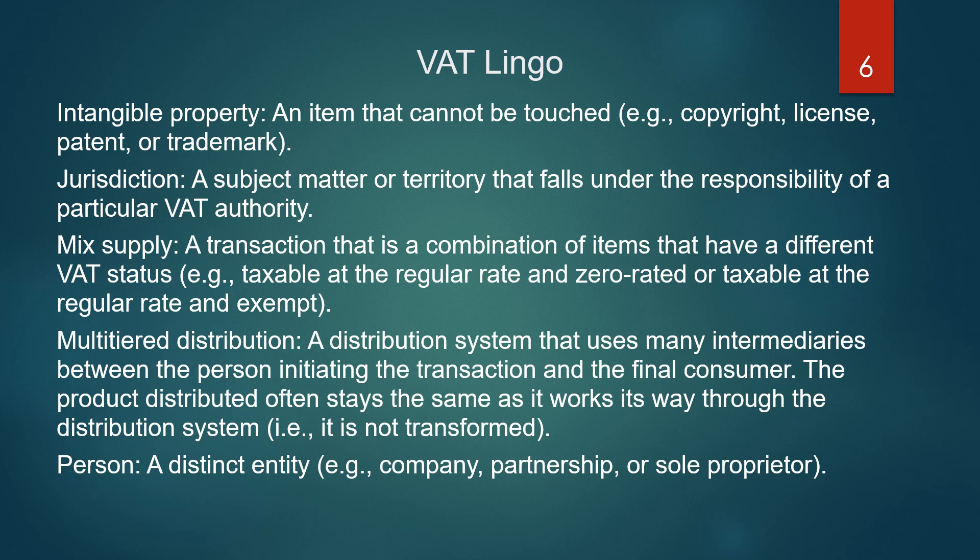Jurisdiction: a subject matter or territory that falls under the responsibility of a particular VAT authority. Mixed supply: a transaction that is a combination of items that have a different VAT status. Example: taxable at the regular rate and zero rated, or taxable at the regular rate and exempt. Multi-tiered distribution: a distribution system that uses many intermediaries between the person initiating the transaction and the final consumer. The product distributed often stays the same as it works its way through the distribution system — i.e., it is often not transformed.